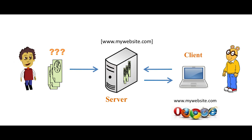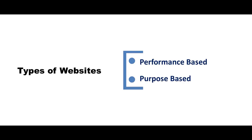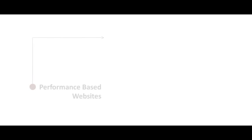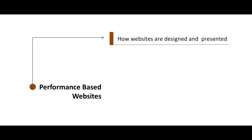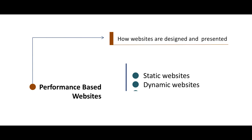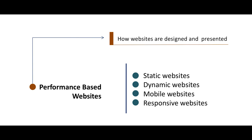Now let us discuss various types of websites. Websites can broadly be classified into two types. The first one is performance-based website and the second one is purpose-based website. Performance-based websites are usually classified on the basis of how websites are designed and presented. Various types of performance-based websites are static websites, dynamic websites, mobile websites, and responsive websites. Let us discuss them one by one.